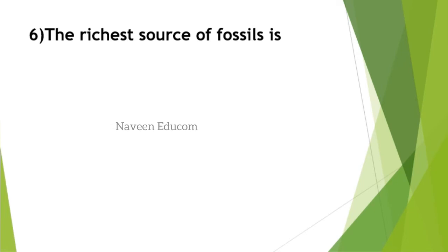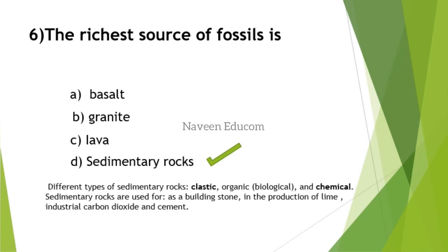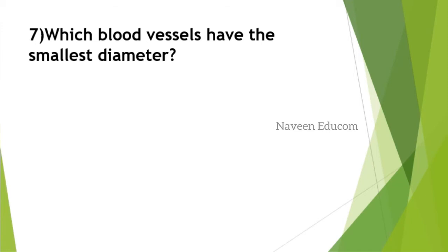The richest source of fossils is sedimentary rocks. Different types of sedimentary rocks are clastic, organic, and chemical. Sedimentary rocks are used for building stone, production of lime, industrial carbon dioxide, and cement. The production of lime portion is very important regarding sedimentary rocks. Which blood vessels have the smallest diameter? The answer is capillaries. Capillaries are the smallest blood vessels in the human body.